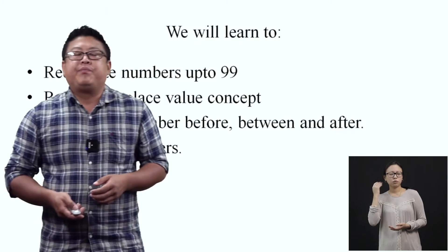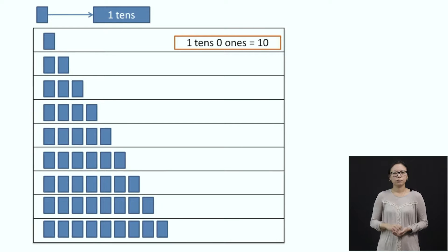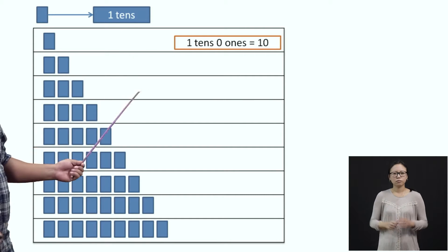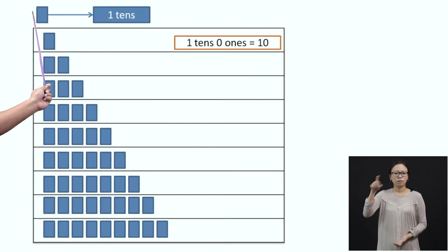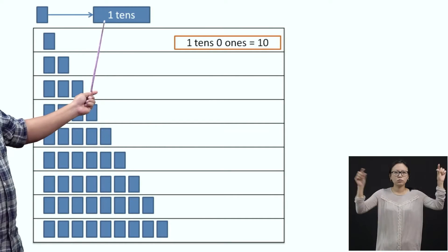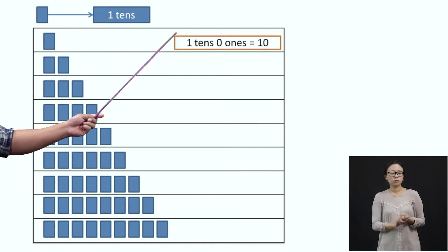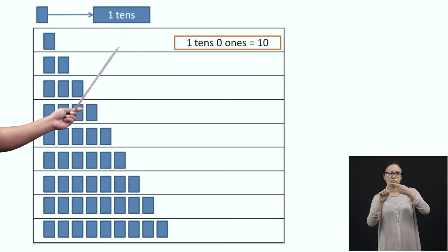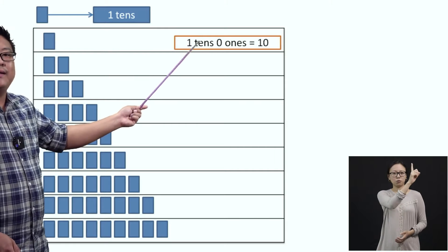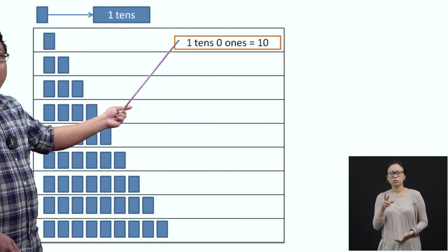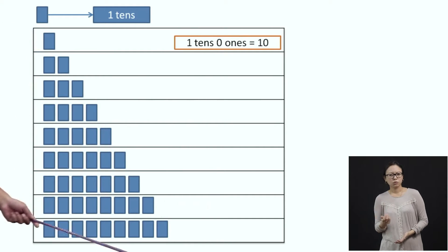Now, to begin with, we will start with the first example. Here, we have a picture in front of us. Let us look at the first blue strip. The blue strip represents one-tenth. In the first row, we have a blue strip. So, this represents one-tenth, which becomes ten.